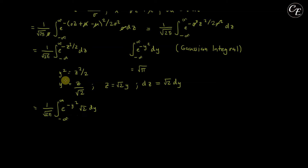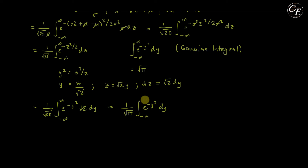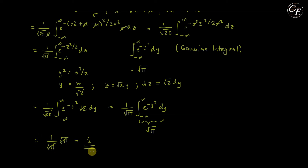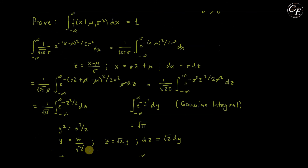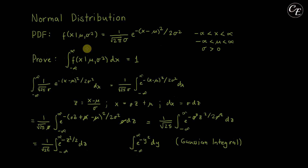Observe that our transformation function is monotonically increasing, so we have no problem with the transformation. Now, let us cancel square root of 2 and the 2. We get 1 over square root of pi, times the integral of e raised to negative y squared, dy, from negative infinity to positive infinity. Comparing this with the Gaussian integral, they are the same, so its value is square root of pi. Our final value is 1 over square root of pi times square root of pi, which equals 1. This completes our proof that the integral of the probability density function of the normal distribution is equal to 1.